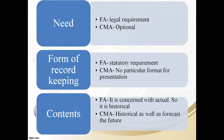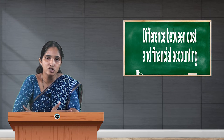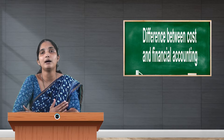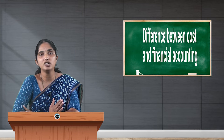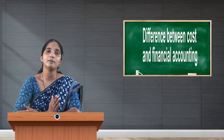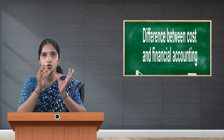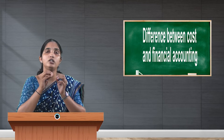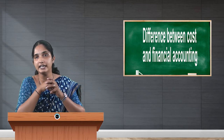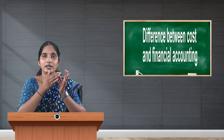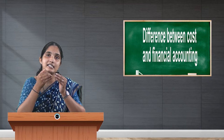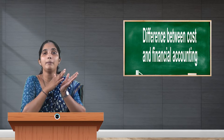The next point is contents. Financial accounting is concerned with actual information — its contents are completely actual. Financial accounting is prepared on the basis of events which have already occurred, so we say financial accounting provides historical information; its contents are based on past events.